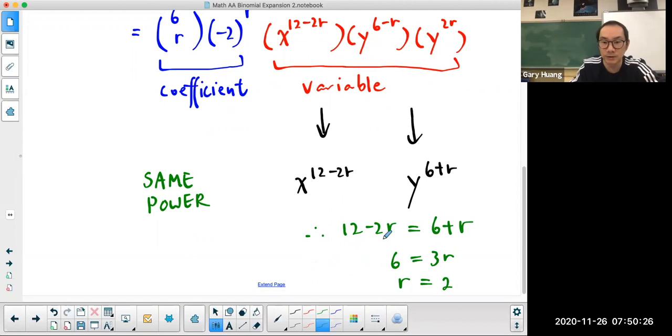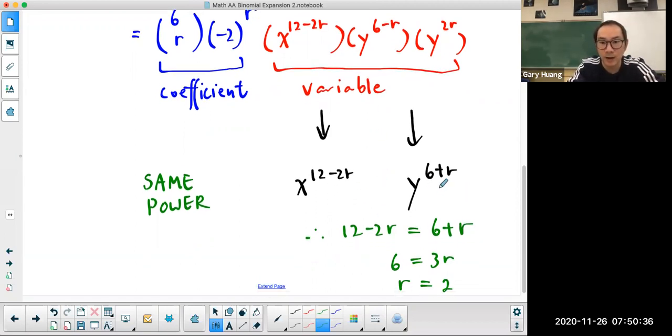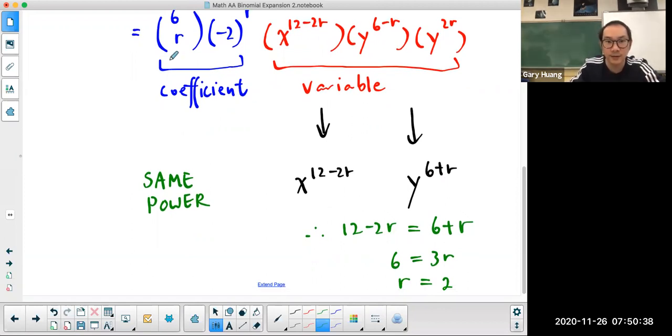When r equals 2, this side I get 8, that side I get 8. So what is the term then? Knowing x is going to be raised to the power of 8 and y raised to the power of 8, I need to find the coefficient.